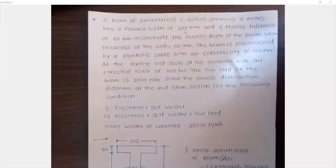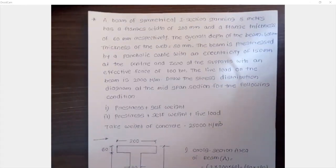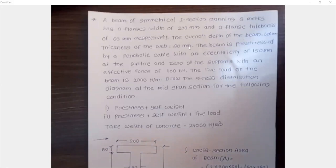We saw earlier in rectangular section how to calculate the stresses at mid-section and the intersection. Today we are going to start to see how we are going to calculate the stresses if the beam is a symmetric I-section. See this problem: a beam of symmetrical I-section spanning 8 meters has a flange width of 200 mm and flange thickness 60 mm. The overall depth of beam is 400 mm and thickness of web 80 mm.